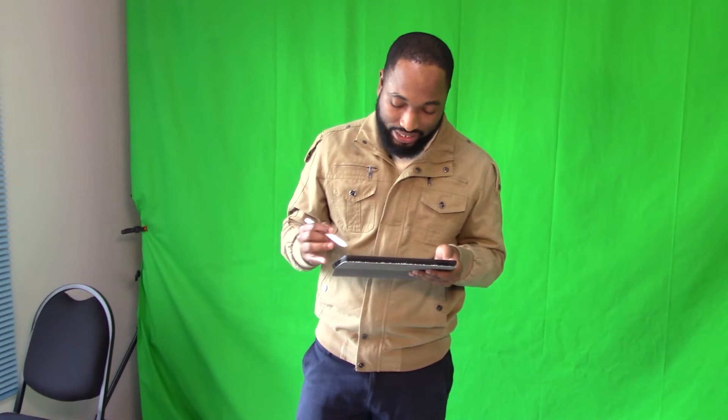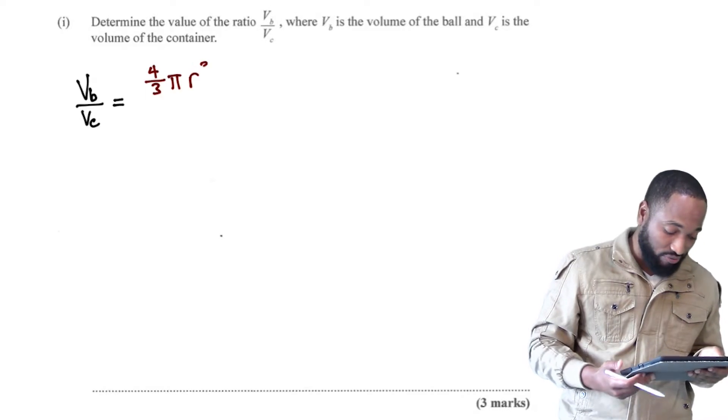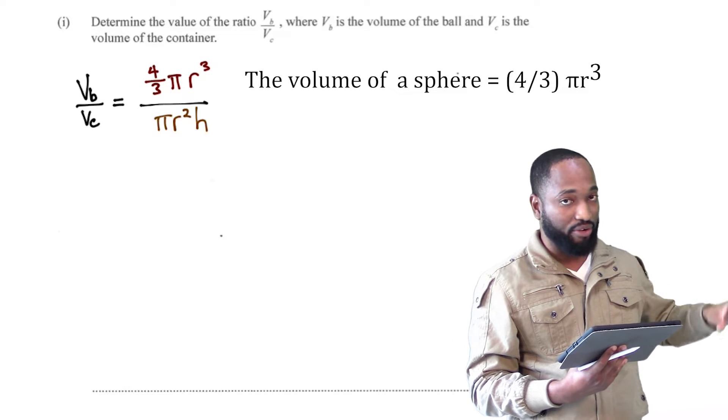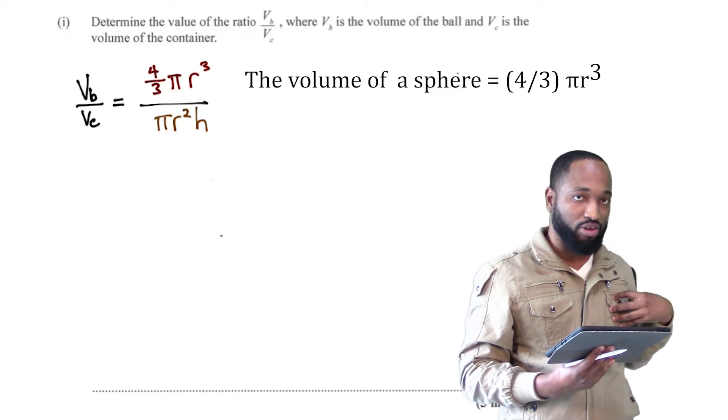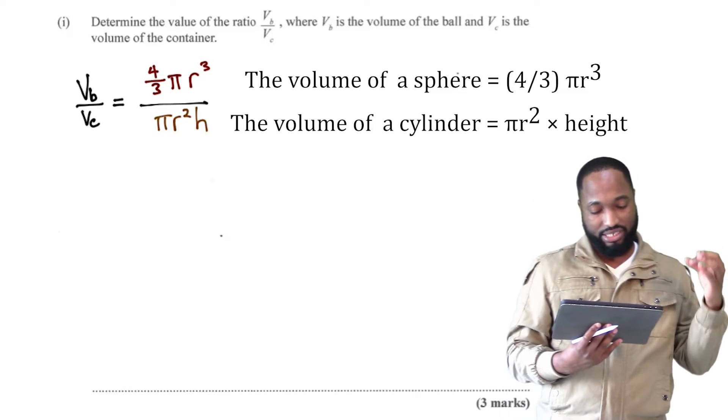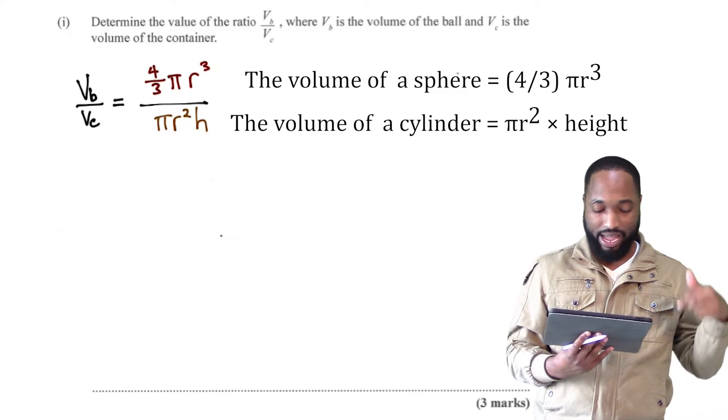VB over VC. And I'm just going to throw in the formula. They give you that the volume of a sphere is four thirds pi r cubed. And we should know that the volume of a cylinder, this is in the front of the paper as well in the formula sheet, is equal to pi r squared by the height.